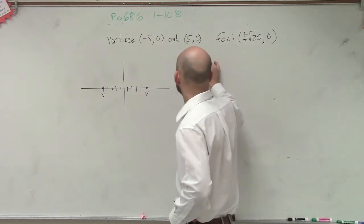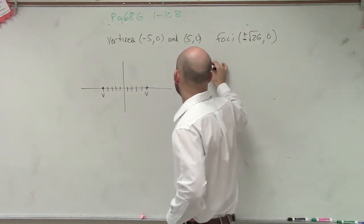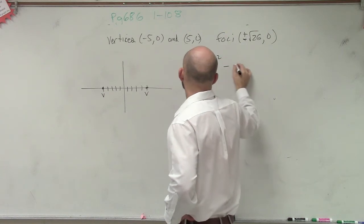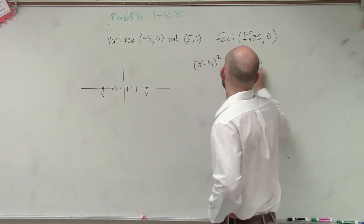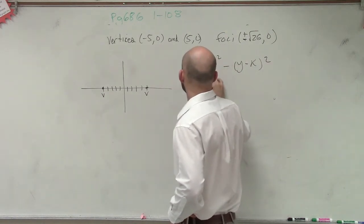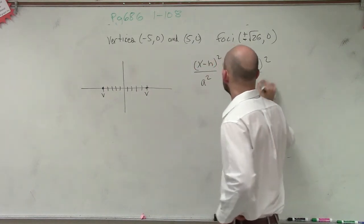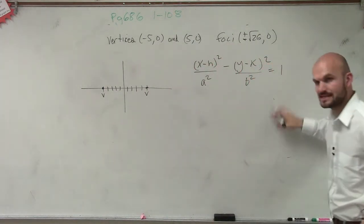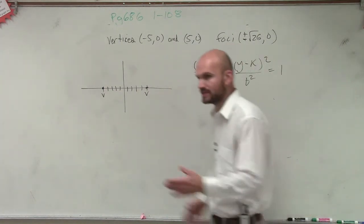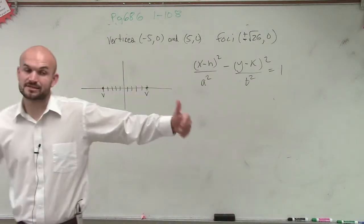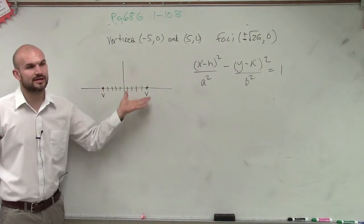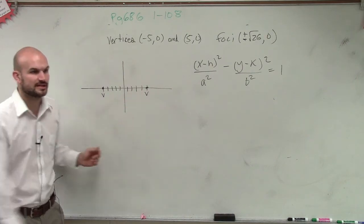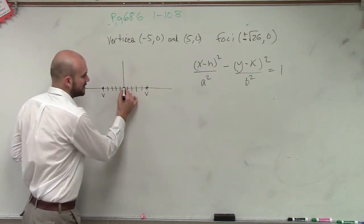So therefore, we can write the equation as x minus h squared over a squared minus y minus k squared over b squared. So you guys need to know that's different than the last problem that we did, right? It's different because now our transverse axis is horizontal. Now we also notice that the center is halfway in between our two vertices. So our center is going to be right here.